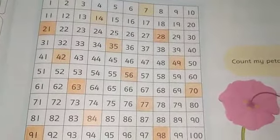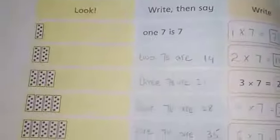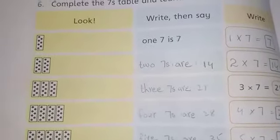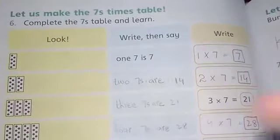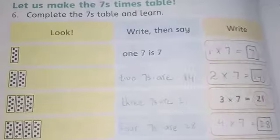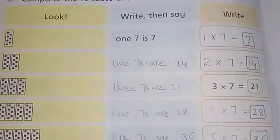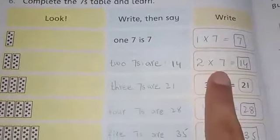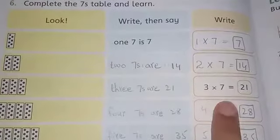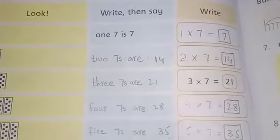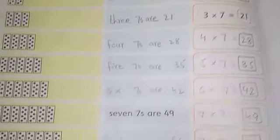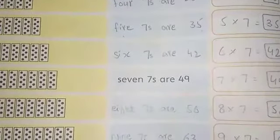Next ہمارے پاس page number 60 ہے۔ Page number 60 پہ ہم نے sevens times table write کیا تھا۔ اس طرح سے ہمارے پاس blocks بنے ہوئے ہیں — ایک block کے اندر seven circles یا dots ہیں، تو اس block کو ہم seven کے ساتھ multiply کر کے اپنا table write کرتے جائیں گے: two sevens are fourteen, three sevens are twenty-one, four sevens are twenty-eight, five sevens are thirty-five, six sevens are forty-two.